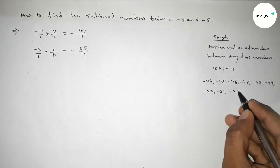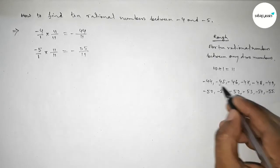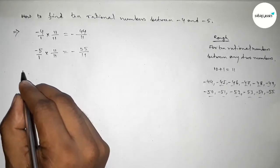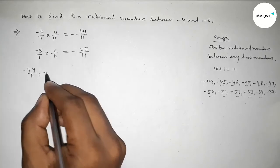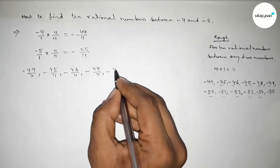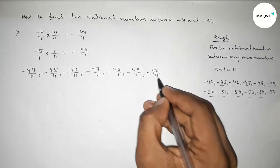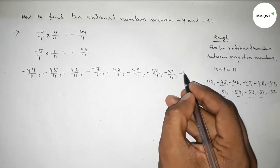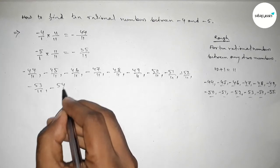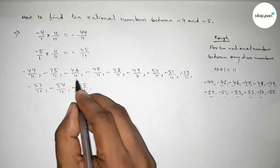Now forming all the rational numbers here. So the first one is minus 44 over 11, minus 45 over 11, minus 46 over 11, up to minus 55 over 11. So first I'll write down here all the rational numbers by this way.